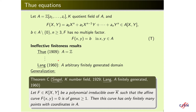Thue equations. The following classical equation is the Thue equation. Let again A and K be as above. Consider a binary form in X and Y with coefficients in A such that F has no multiplicative factor. This is called a Thue equation. The first very important result was obtained by Thue in 1909 over Z, and that is why this equation is named after him. This result was generalized by many people in an ineffective way.